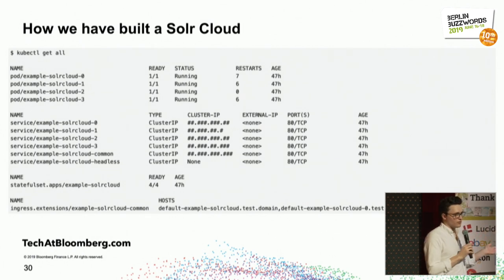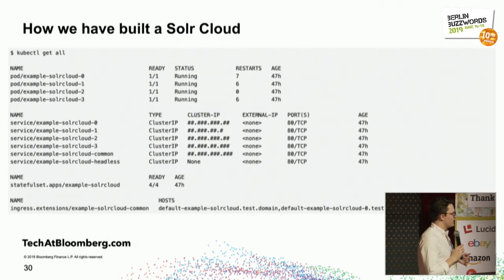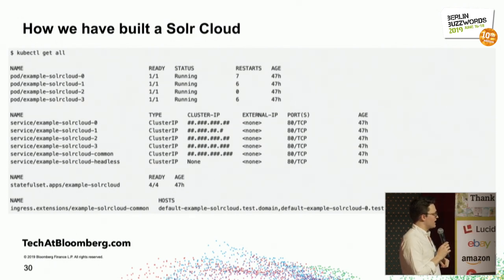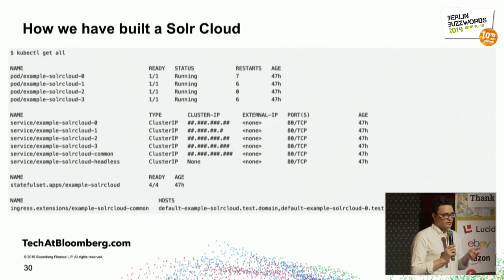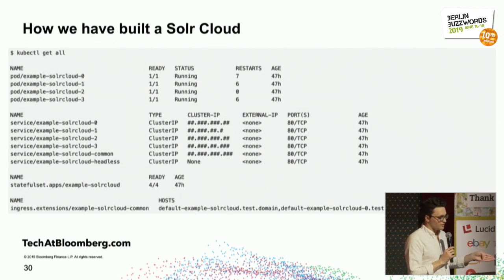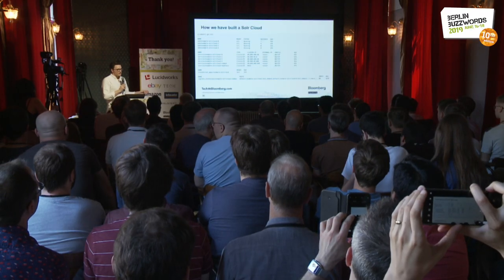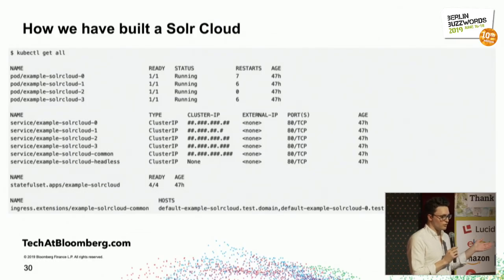So how have we built the Solr cloud in Kubernetes? At the bottom we have a stateful set with four pods — our four Solr cloud pods. We have many different services: one each for all of our Solr cloud nodes, one common endpoint for all nodes together, and a headless service. At the bottom we have an ingress with multiple hosts — the common Solr cloud host as well as individual node hosts. This is how we route traffic into the Kubernetes cluster and into our individual Solr nodes.